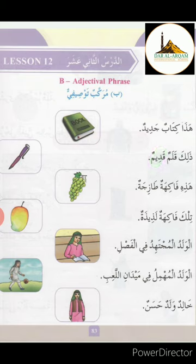Remember: mausuf and shifat both will be in the same pattern. If mausuf is male, then shifat will also be male. If mausuf has alif-lam connected, then shifat will also be alif-lam connected.